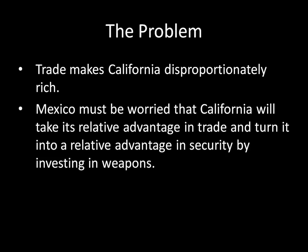The problem is that California being disproportionately rich now means Mexico has to be worried that California will take its relative advantage in trade and turn it into a relative advantage in security — by taking all that extra money and investing in weapons. Once California has guns and bombs, it can point them toward Mexico and demand security concessions. The easiest example is that California could demand extra territory from Mexico — redrawing the border to give California more territory. This is something Mexico has to be worried about in a world where security is paramount: that California's relative gains in trade will turn into relative gains in security and then affect Mexico negatively.